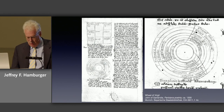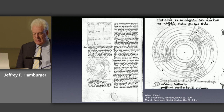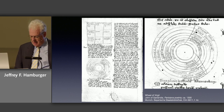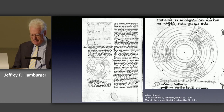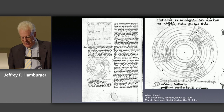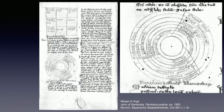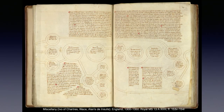Another diagram, the so-called Wheel of Virgil, seen here in a German manuscript of John of Garlandia's Parasena Poetria, systematizes style and subject matter according to a three-fold division codified after the works of the Augustan poet: the lowest style according to the Bucolics, the middle style according to the Georgics, and the highest or sublime style according to the Aeneid.